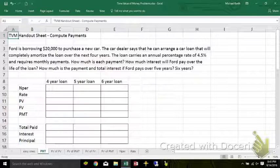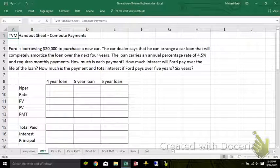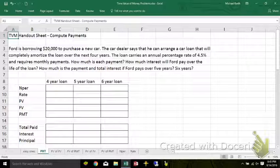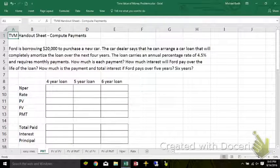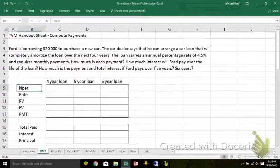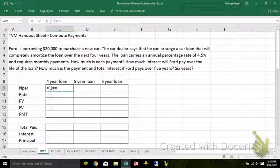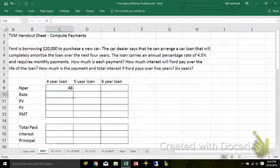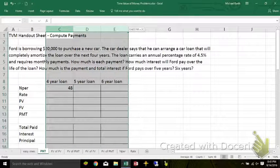So we're going to start with Fred borrowing money to purchase a new car. If Fred wants to borrow $20,000, the dealer can arrange a loan that will completely amortize the loan over the next four years. It has an annual rate of 4.5% but requires monthly payments. So if there's 12 payments a year for four years, there'll be 48 monthly payments for this first set.